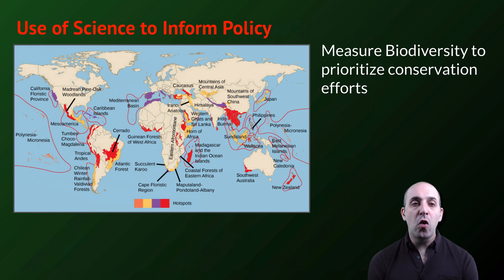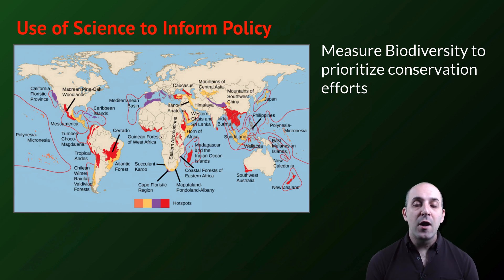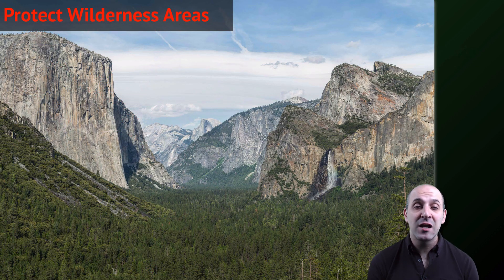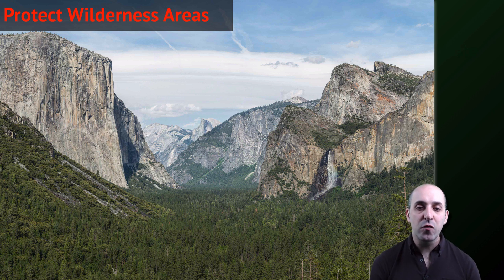Generally speaking, the goal of conservation biology is to use science to inform policy. This can be seen in approaches like measuring the biodiversity of different regions of the planet to determine those regions of maximal biodiversity where we will get the most return for our conservation efforts. Science can also be used to model future patterns and help anticipate problems before they occur. It also involves simply protecting wilderness areas — national parks and other protected wilderness areas provide the rest of the biological system with human-free, or at least relatively human-free, areas in which populations of organisms can exist without the effects of encroaching human society.